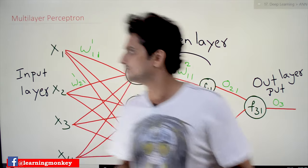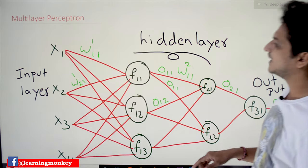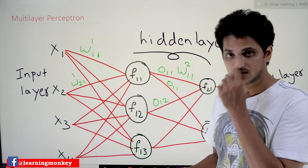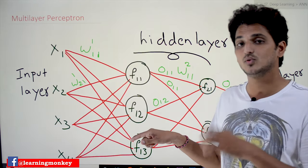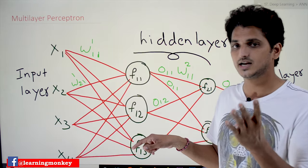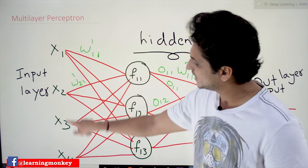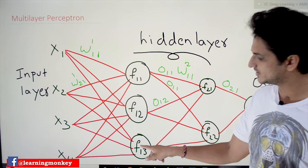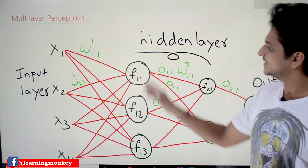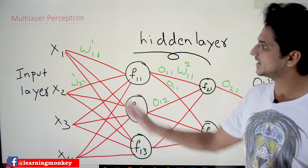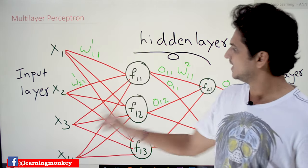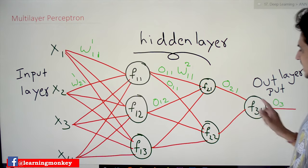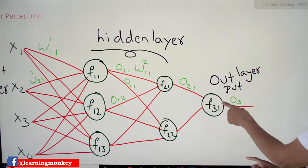Let's check an example. This is our multi-layer perceptron. The example dataset we consider here has four input data points: x1, x2, x3, and x4. This is one perceptron, this is another perceptron, and this is another perceptron. This first layer we call the input layer, the middle ones we call hidden layers, and the last one is the output layer.